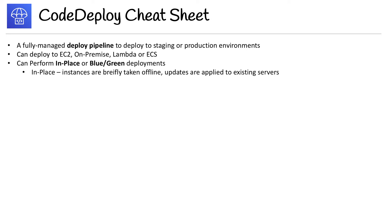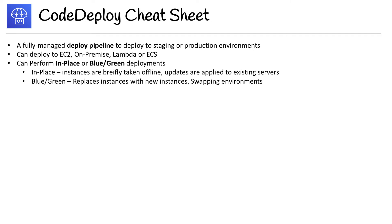Let's talk about those two right now. For in-place, instances are briefly taken offline, updates are applied to existing servers, and they're brought back into service. For blue-green, it replaces the instances with new instances, swapping the environments.